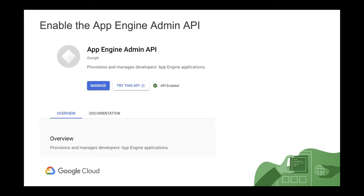This screenshot shows what you have to do before using an API. I went to the App Engine Admin API and enabled it for this example. You don't have to worry about this part because it's done directly through GCP before using the cloud shell.